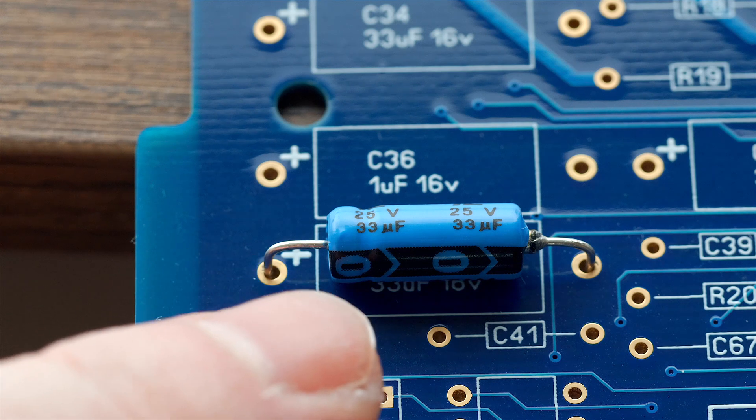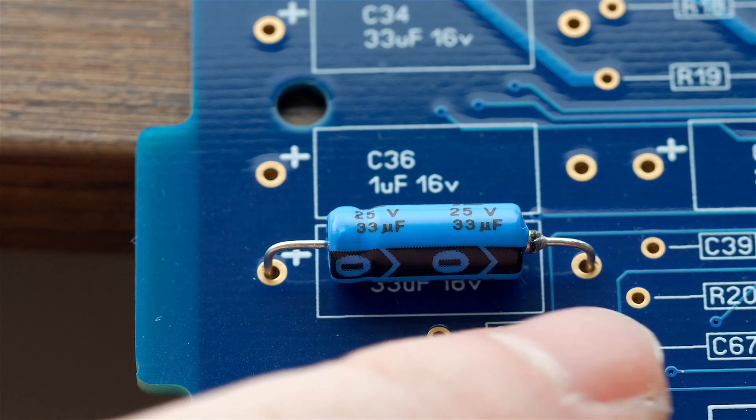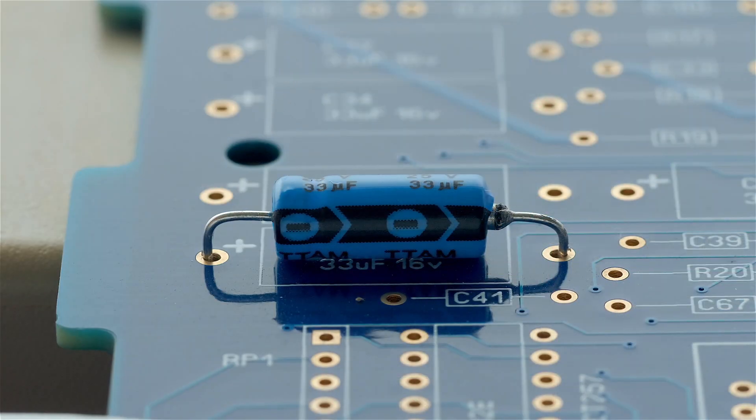And because it's a polarized electrolytic, we want to make sure that the negative points to the negative side. You see the plus over here is positive.